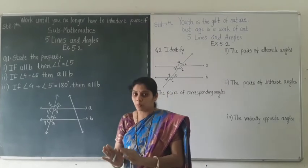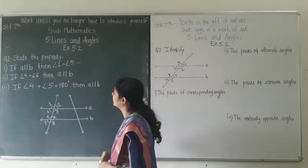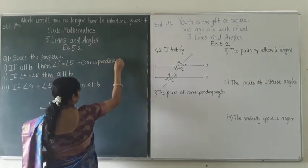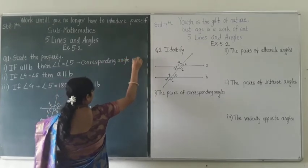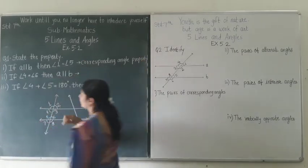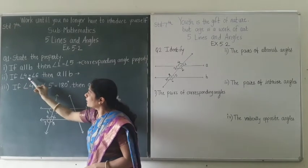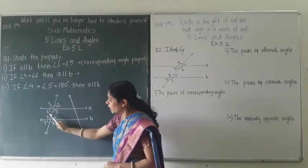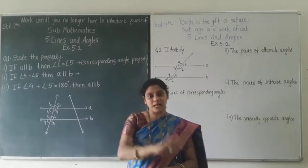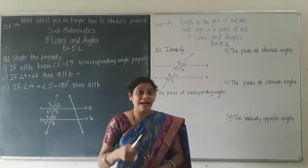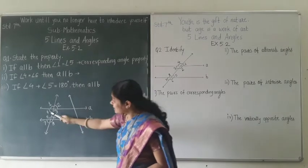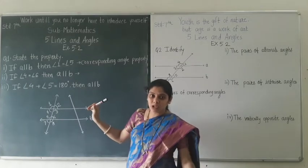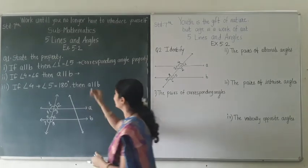Write the answer: corresponding angle property. Now the second part: if angle 4 is equal to angle 6, then A is parallel to B. Angle 4 and angle 6 are located at opposite sides of the transversal and show different directions — this is the characteristic of alternate angles. So if these two angles are equal then the two lines are parallel. We will write here: alternate angle property.